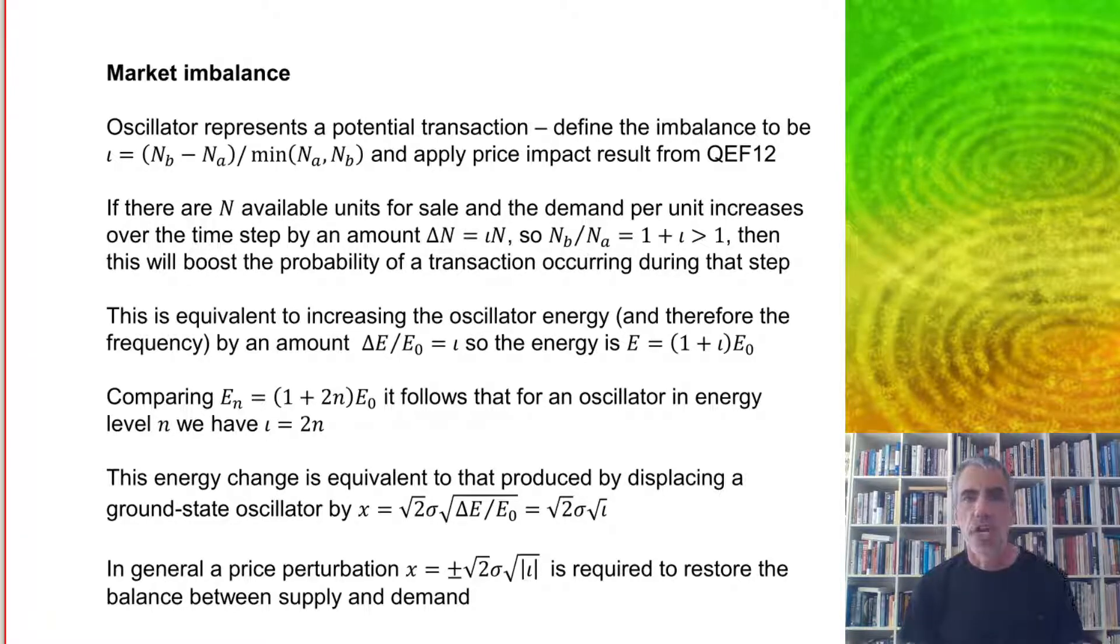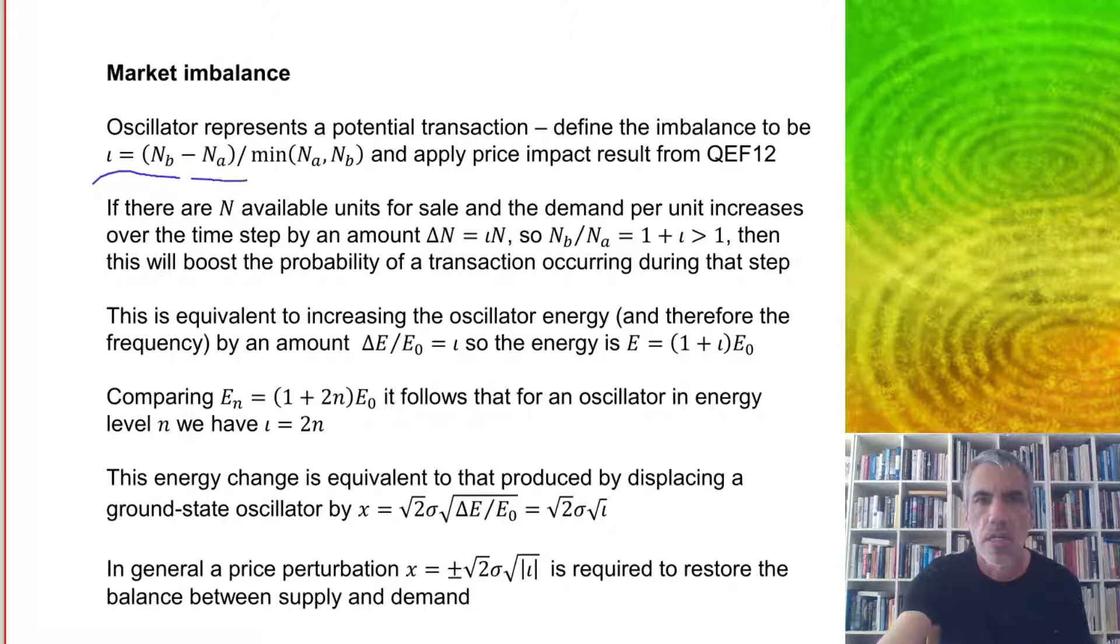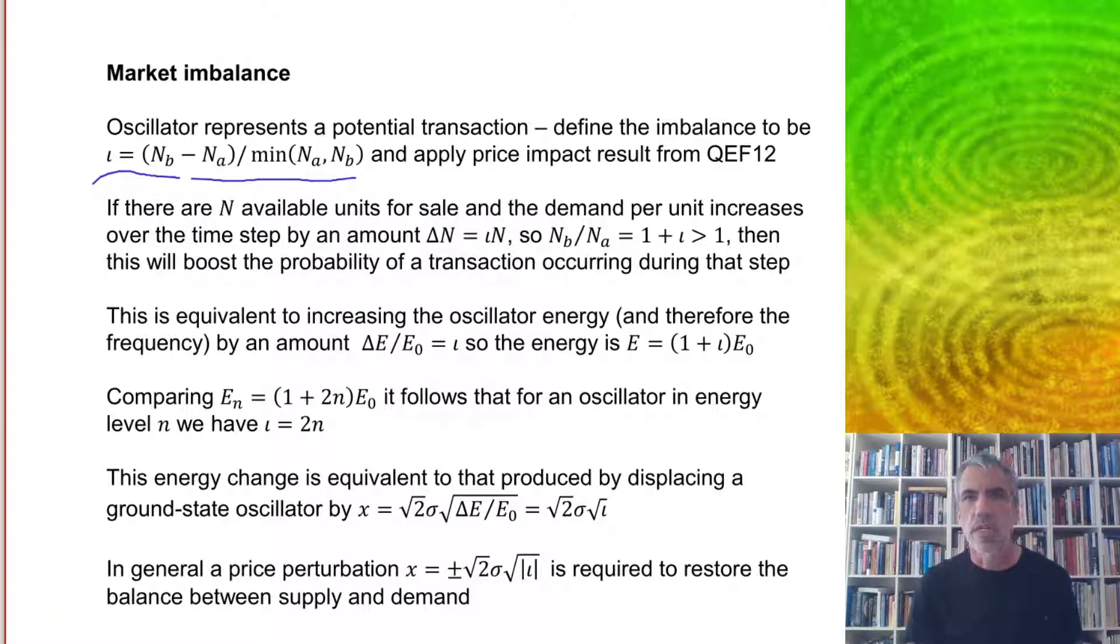So in the general case, we use an oscillator to represent each potential transaction, identical oscillator. We define the imbalance to be IOTA equal to the difference between the number of buyers and the number of sellers, NB and NS, divided by the smallest of those two numbers. That's the potential number of transactions. And then we apply the price impact result.